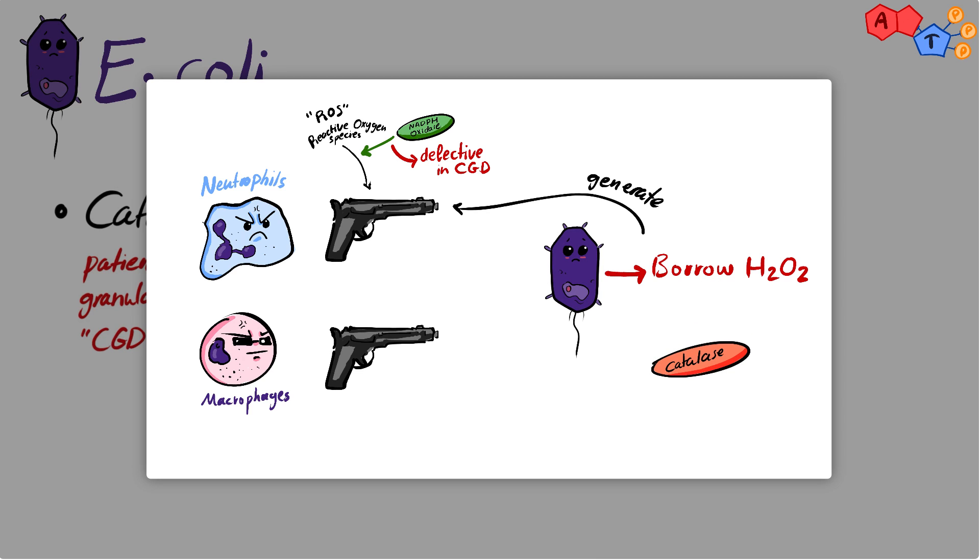But if the bacteria has the catalase enzyme, then this borrowing mechanism will not work, since catalase enzyme will break down any hydrogen peroxide in the bacteria, which will make the patient susceptible to catalase positive bacteria.